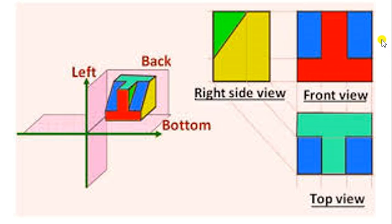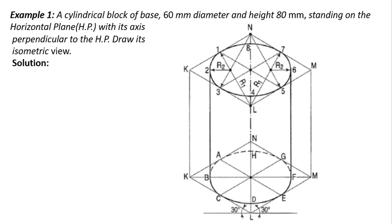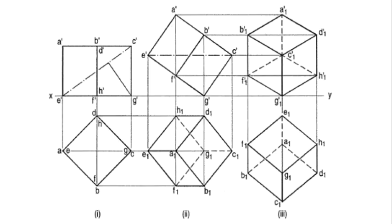Now let us see the first example. A cylindrical block of base 60mm diameter and height 80mm is standing on the horizontal plane with its axis perpendicular to the horizontal plane. Draw its orthographic views. Our cylinder is 80mm in height, so the front view will be a rectangle of height 80mm, since the height is more than the diameter.